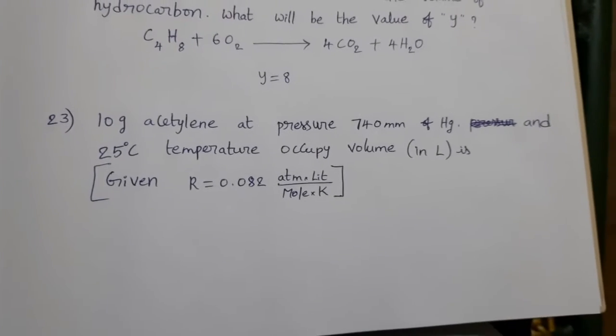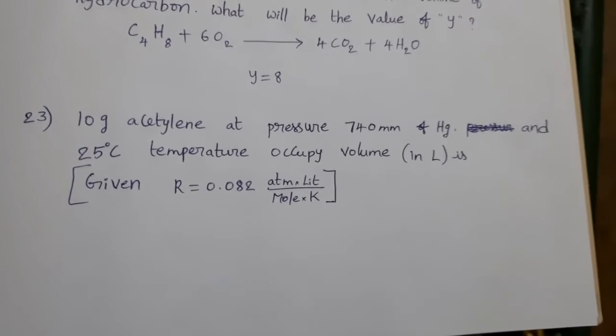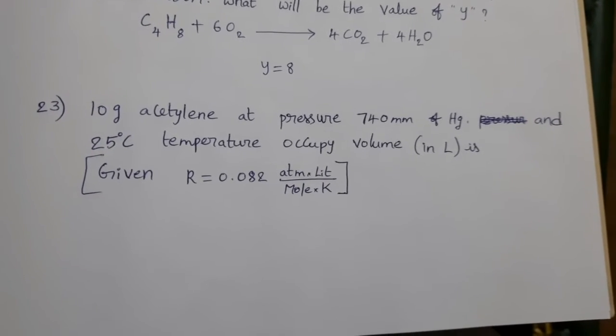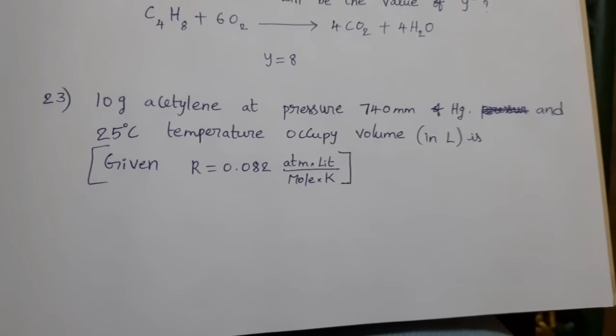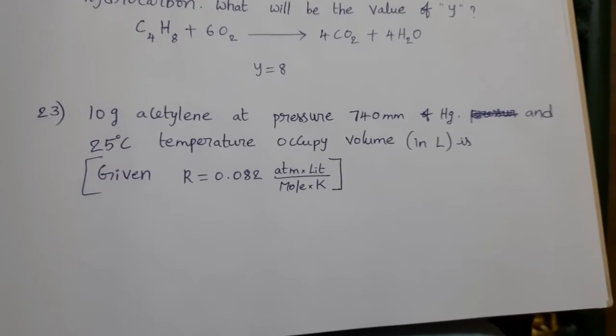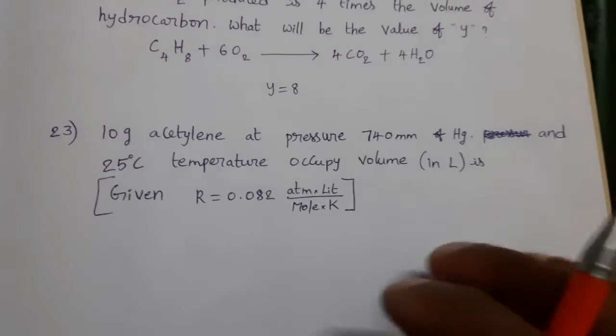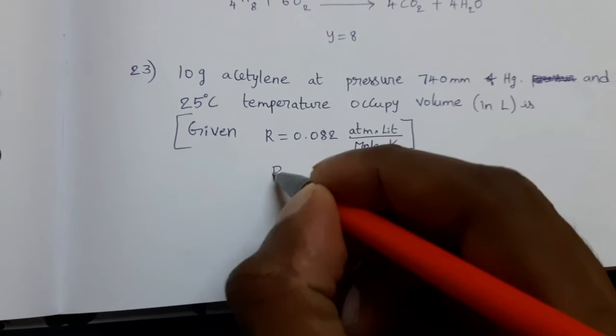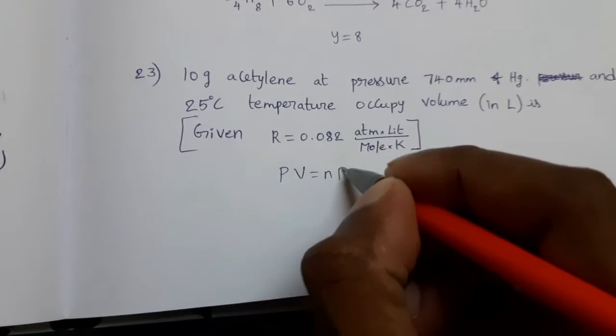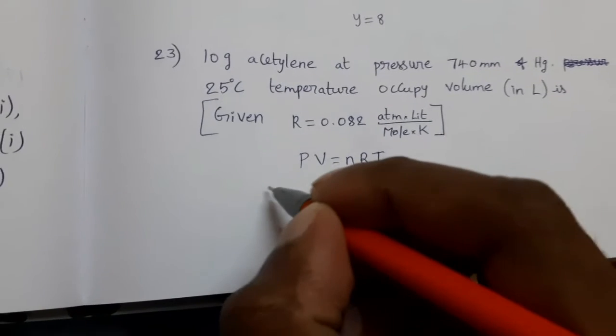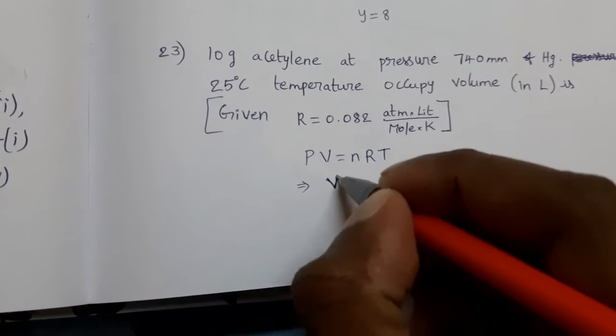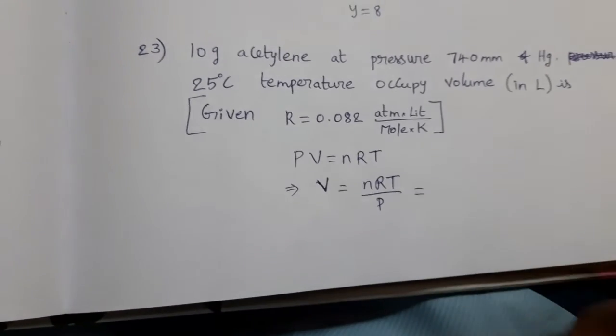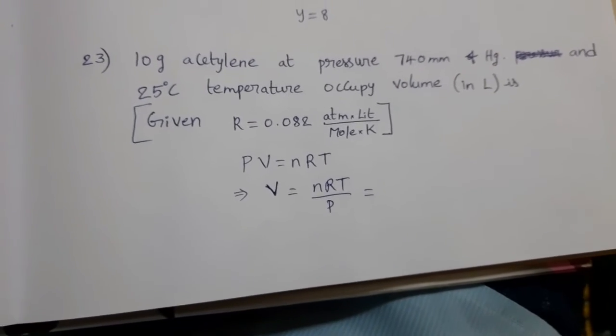Next, 10 grams acetylene at pressure 740 mm of Hg and 25 degree Celsius temperature occupy volume in liters is. It's very simple numerical related to ideal gas equation. What is ideal gas equation? PV equal to NRT. From this, we want volume. V equal to NRT by P. N means number of moles. Is it given? No.